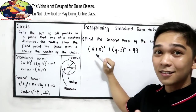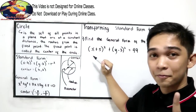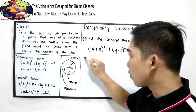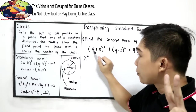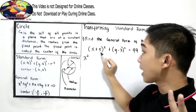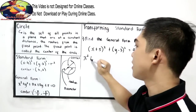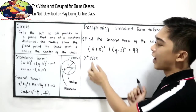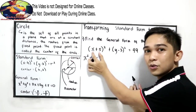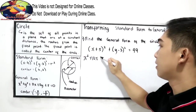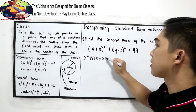Recalling our Grade 8 lesson on special products: first step, square the first term — that will become x squared. Second step, multiply the first and the second term: x times 5 is 5x, times 2, that is 10x. Plus, square the second term: 5 squared gives us 25.